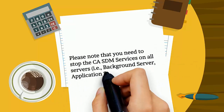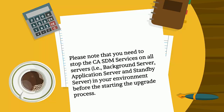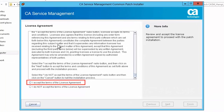Please note that you need to stop the CASDM services on all servers — Background Server, Application Server, and Standby Server — in your environment before starting the upgrade process. Now, login to the standby server. Right-click setup.exe and select Run as Administrator. Review and accept the license agreement information, then click Next to continue.